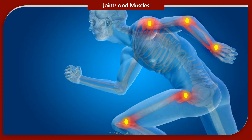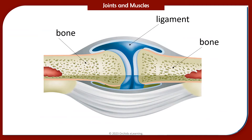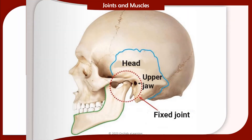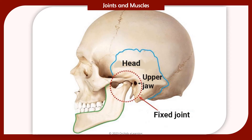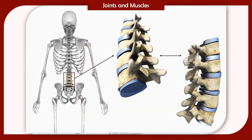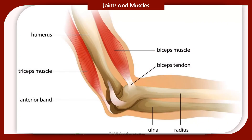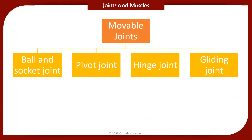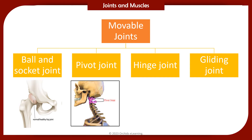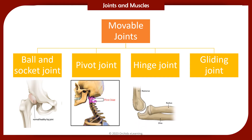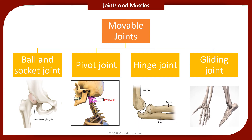Joints are places where two or more bones meet. The bones are held together at the joint by ligaments. Fixed or immovable joints, like those of the skull, provide protection. Slightly movable joints provide support. Freely movable joints are the ones that allow us to perform a variety of movements. The four major movable joints in our body are: the ball and socket joint, pivot joint, hinge joint, and gliding joint.